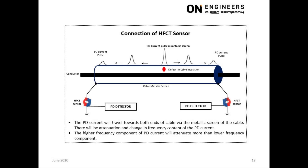This slide shows the connection point of the HFCT. HFCTs are commonly used for online PD measurement of screen-type HV cables. In Singapore, the most common screen type is copper tape with at least 50% overlap. A defect within the cable insulation will produce PD current in the copper tape, which flows to earth via the earthbreak of the cable termination. The HFCT is connected at the earthbreak, available at both ends of the cable, to detect any PD current flowing.